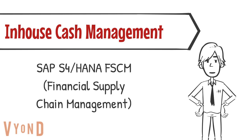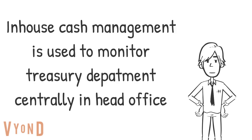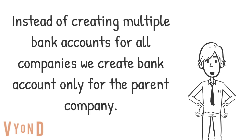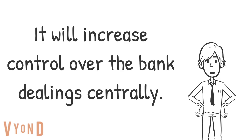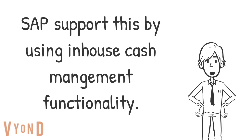In-house cash management in SAP S4 HANA FSCM — Financial Supply Chain Management — is used to monitor the Treasury Department centrally in the head office. Instead of creating multiple bank accounts for all companies, we create a bank account only for the parent company. All payments and receipts are dealt through one central bank account only, which increases control over bank dealings centrally.